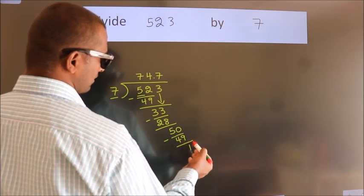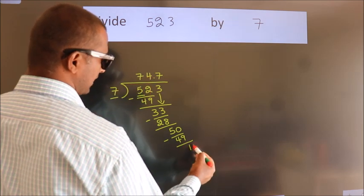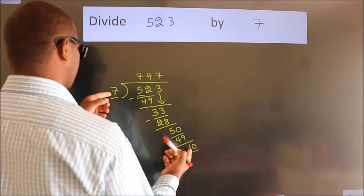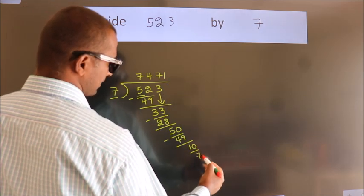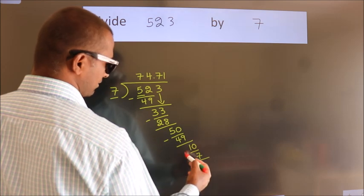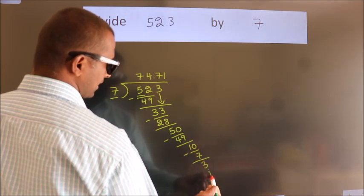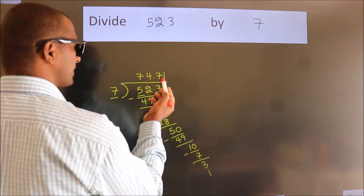After this, we already have the decimal, so directly take 0, making 10. A number close to 10 in the 7 table is 7 times 1 equals 7. Now, we subtract. We get 3. The division continues, but it is enough if we do up to 2 decimal places.